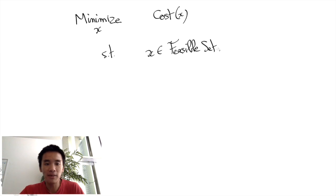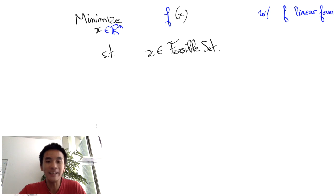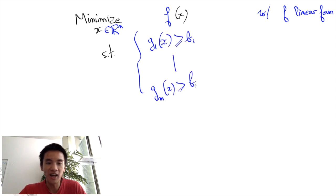A linear program is a mathematical program whose decision variables are real numbers, whose cost function f is a linear combination of the decision variables, and whose constraints are all inequalities or equalities of the form g_i of x greater equals to b_i, where the g_i's themselves are linear combinations of decision variables and the b_i are real valued thresholds.